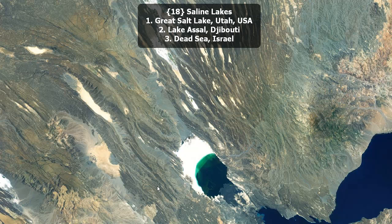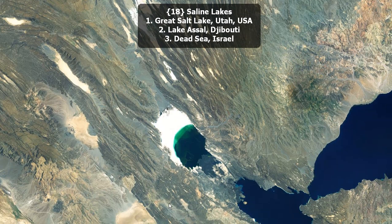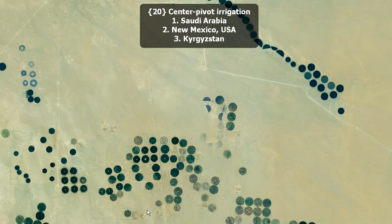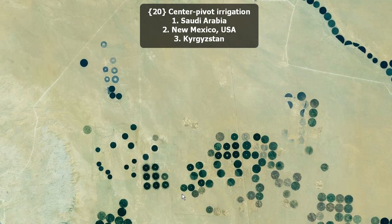Saline lakes. Great Salt Lake, Utah, USA? Lake Asal, Djibouti? Or the Dead Sea in Israel? Famous temples. Jokhang Temple, Tibet, China? Taj Mahal, India? Or Angkor Wat, Cambodia? Center pivot irrigation. Saudi Arabia? New Mexico, USA? Or Kyrgyzstan?